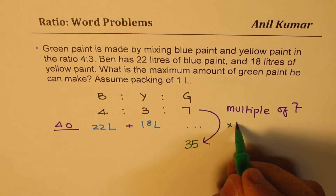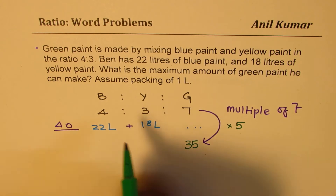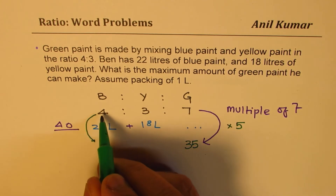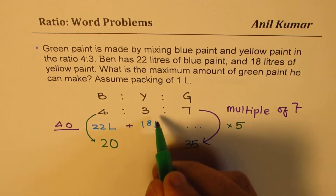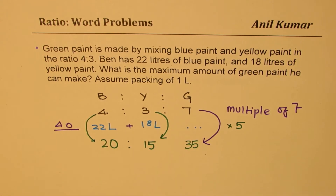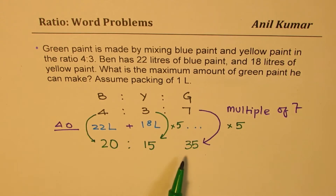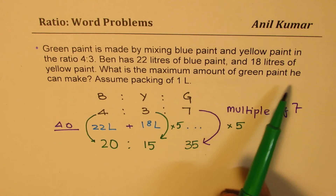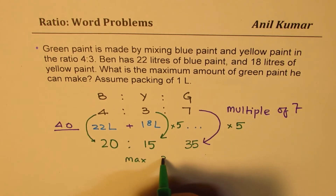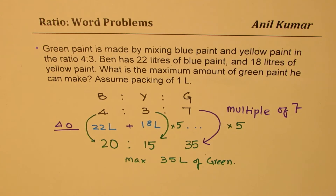So the maximum is 35 liters of green paint. How? Multiply the ratio by 5: 5 times 4 is 20 liters of blue, and 5 times 3 is 15 liters of yellow. That uses 20 blue and 15 yellow, totaling 35 liters. Since 1 liter is the minimum packing, the maximum amount of green paint Ben can make is 35 liters.